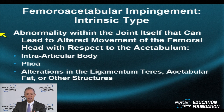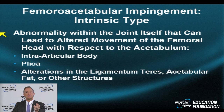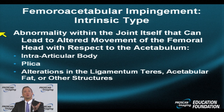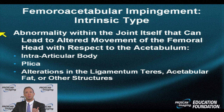Let's begin with femoro-acetabular impingement of intrinsic nature. By intrinsic, we mean there is an abnormality inside the joint that can lead to altered joint biomechanics. When you flex your leg, a body inside the joint lessens the available room and forces the femoral head more superiorly than it otherwise might go. This can also happen with a plica, alterations in the ligamentum teres, too much acetabular fat, or any other structure that doesn't belong — for instance, pigmented villonodular synovitis.